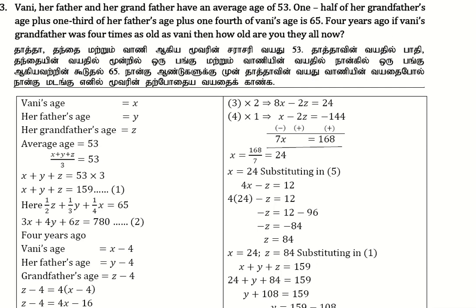We're going to talk about exercise 3.1. Vani, her father, and her grandfather have an average age of 53. One half of her grandfather's age plus one third of her father's age plus one fourth of Vani's age is 65. Four years ago, Vani's grandfather was four times as old as Vani. How old are Vani, her father, and her grandfather now?